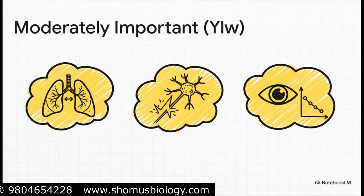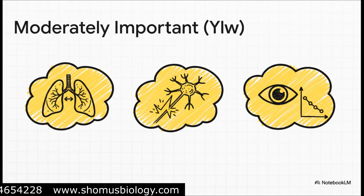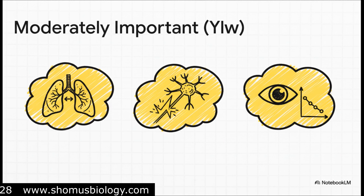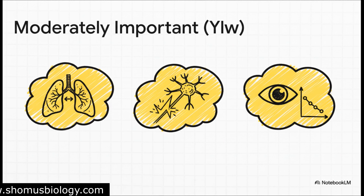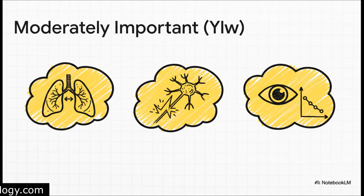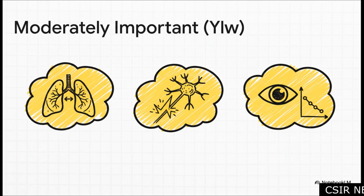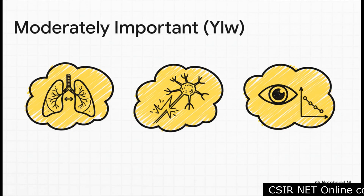Moving on to our yellow list — these topics pop up often enough that you definitely need a solid grip on them, but they aren't quite the main event. For the respiratory system, zero in on the exchange of gases. With the nervous system, don't just memorize the parts of a neuron — the questions are all about the dynamics: the action potential and the resting membrane potential. And an insider tip on sense organs: vision, especially rod and cone cells, used to be a huge topic, but we're seeing the number of questions on it gradually go down.